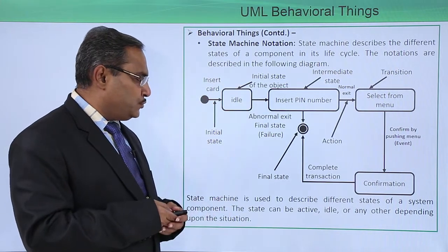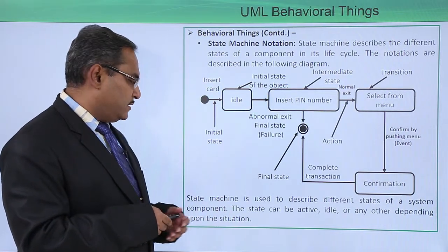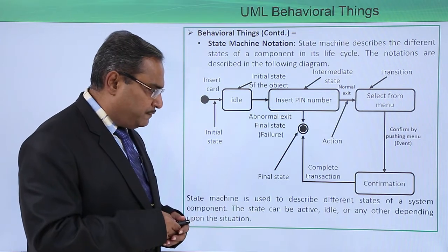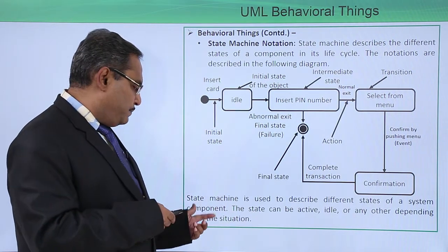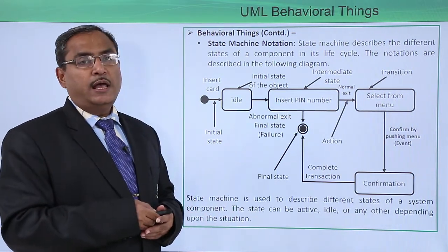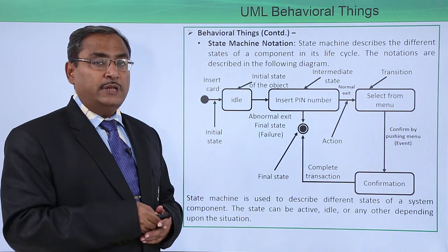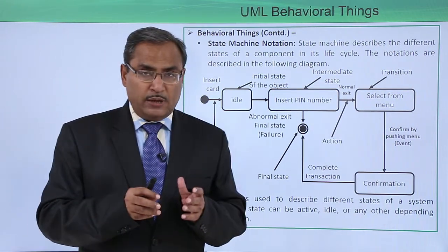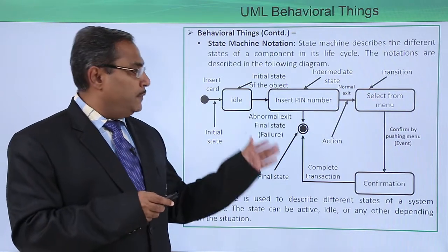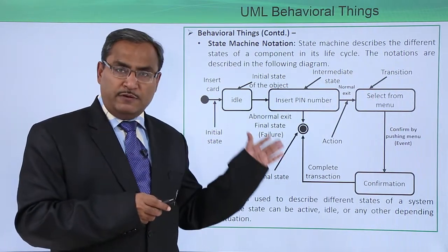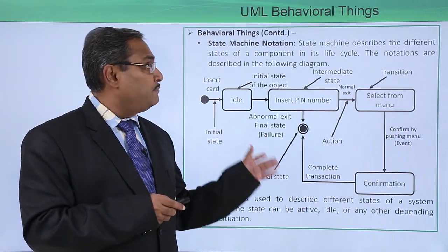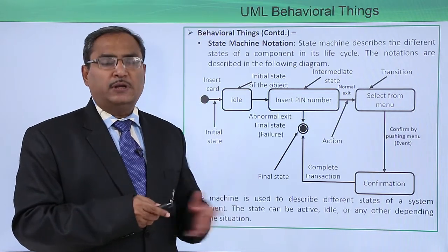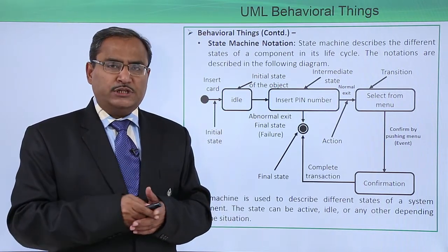A state machine is used to describe the different states of a system component. The state can be active, idle, or any other, depending on the situation and the event that has been initiated. In this way, we have discussed what UML behavioral things are and what the different notations are used in this aspect. Thanks for watching this video.